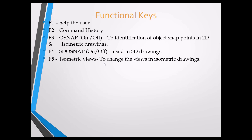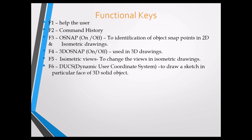F5 toggles Isometric Views. Since isometric has three views — top, left, and right — F5 is used to change between them while drawing. F6 is DUCS (Dynamic User Coordinate System), used completely in 3D objects. Since 3D objects have 10 views and can be seen in 360 degrees, F6 must be on when you want to draw a sketch on a particular face of a 3D object.